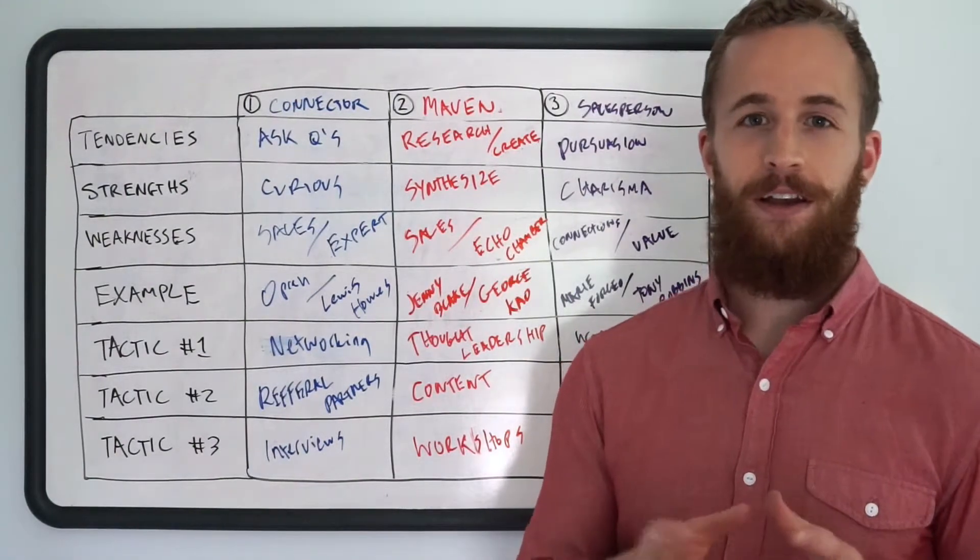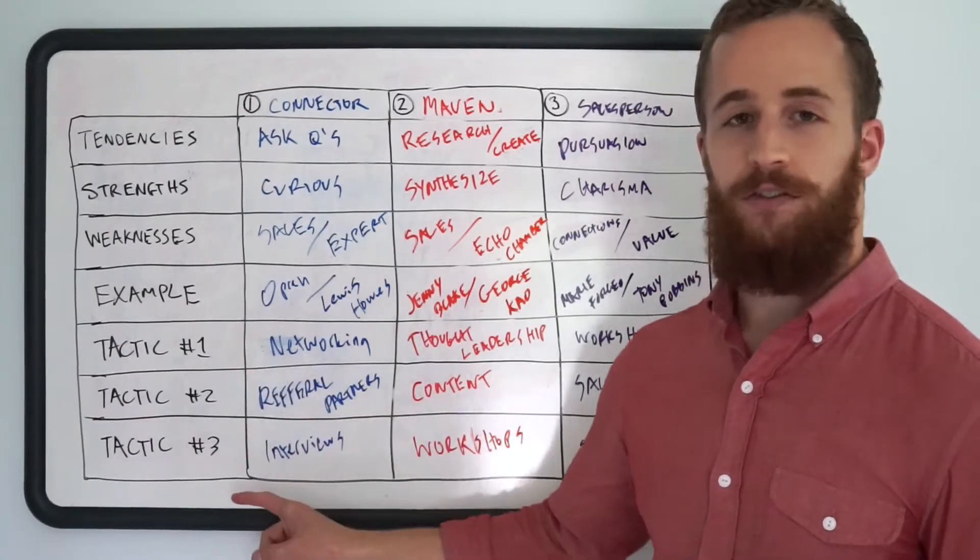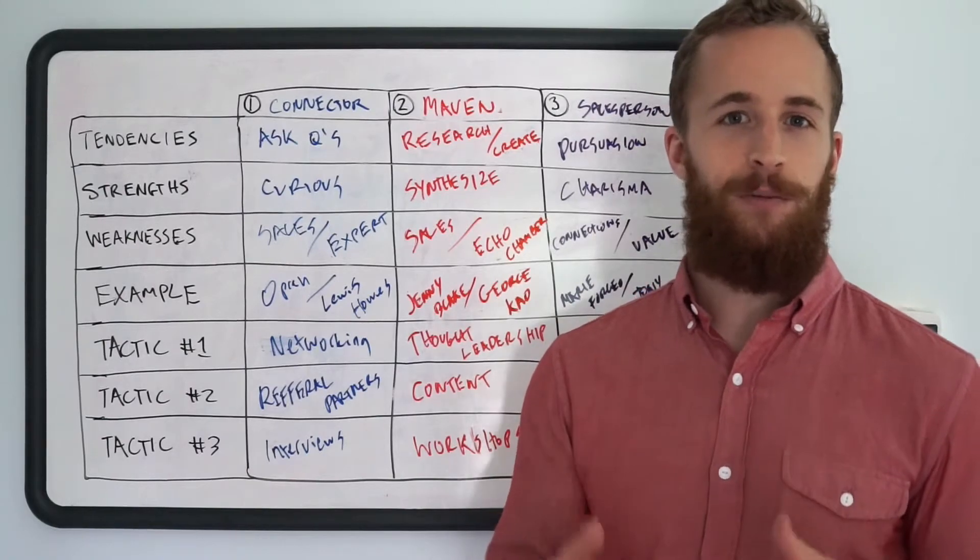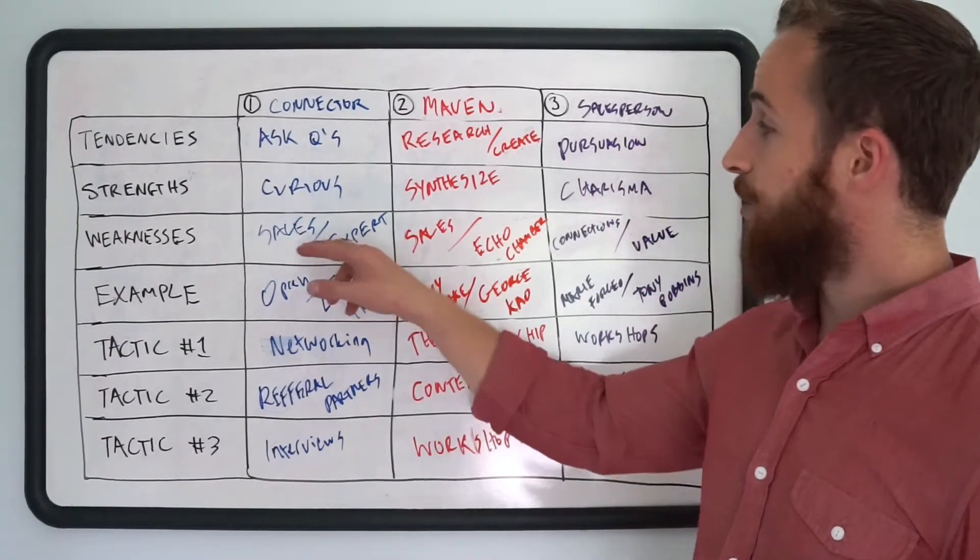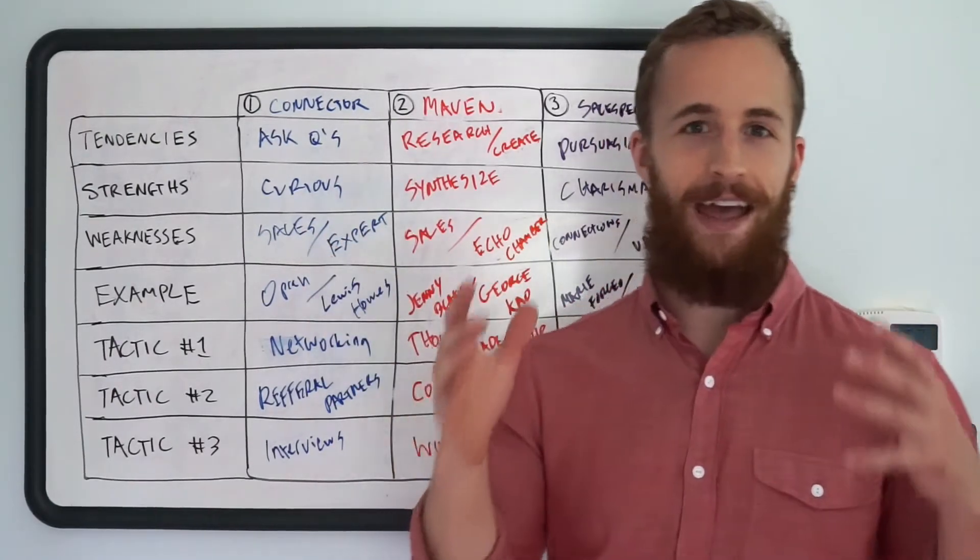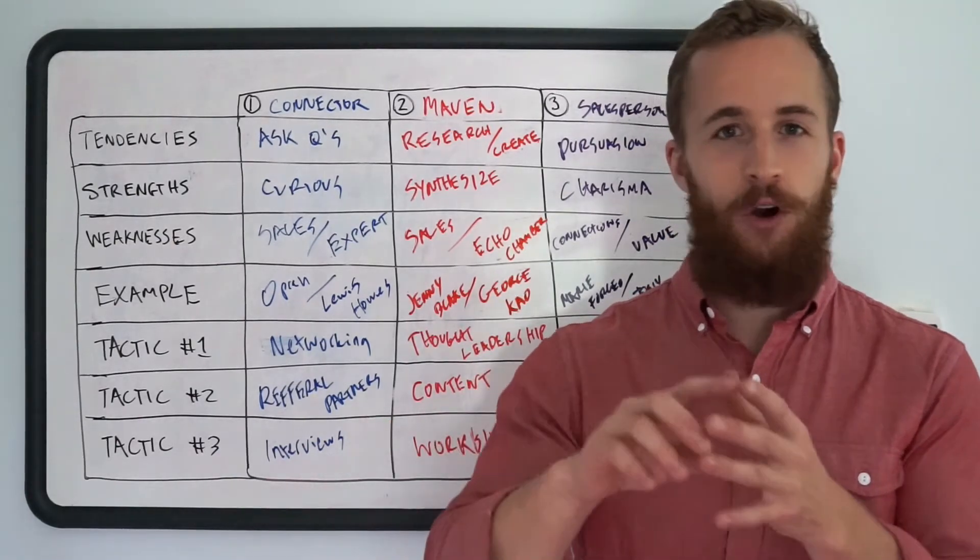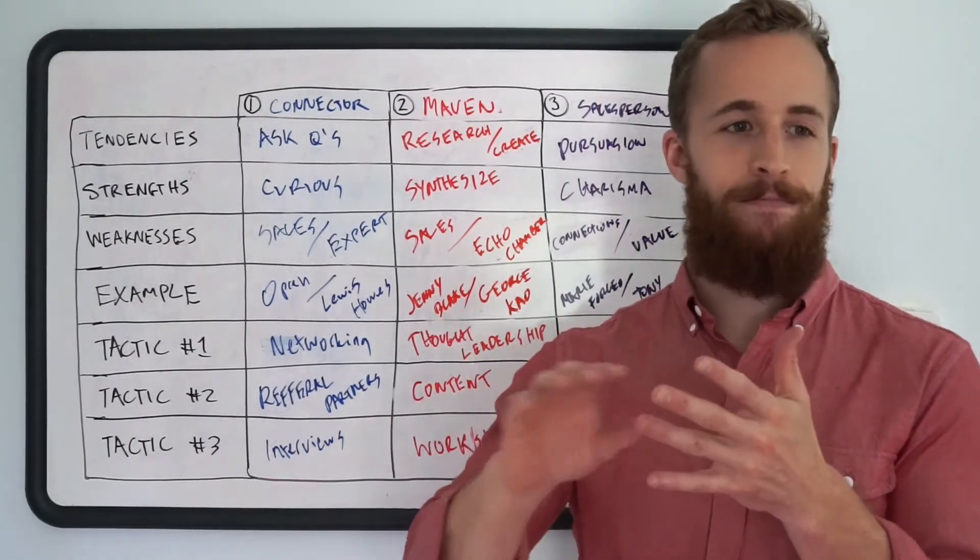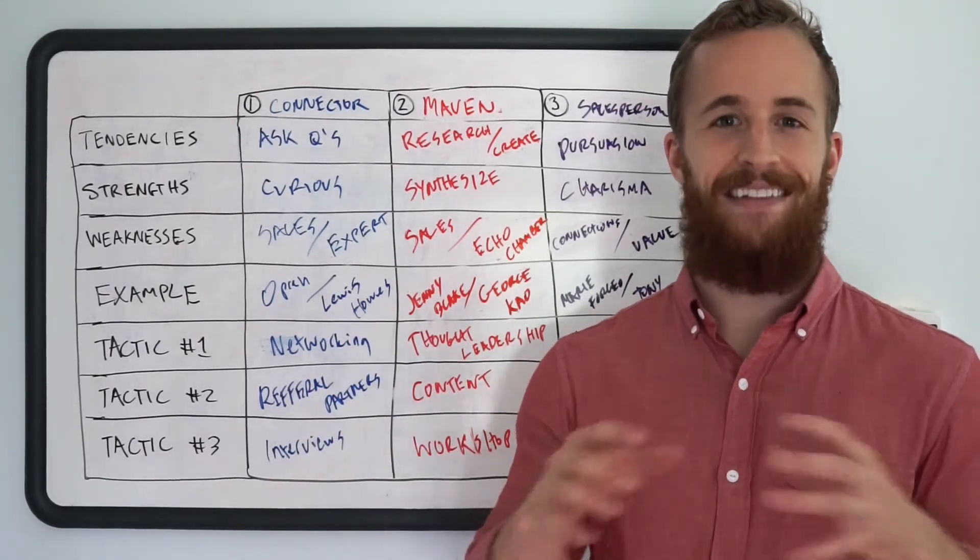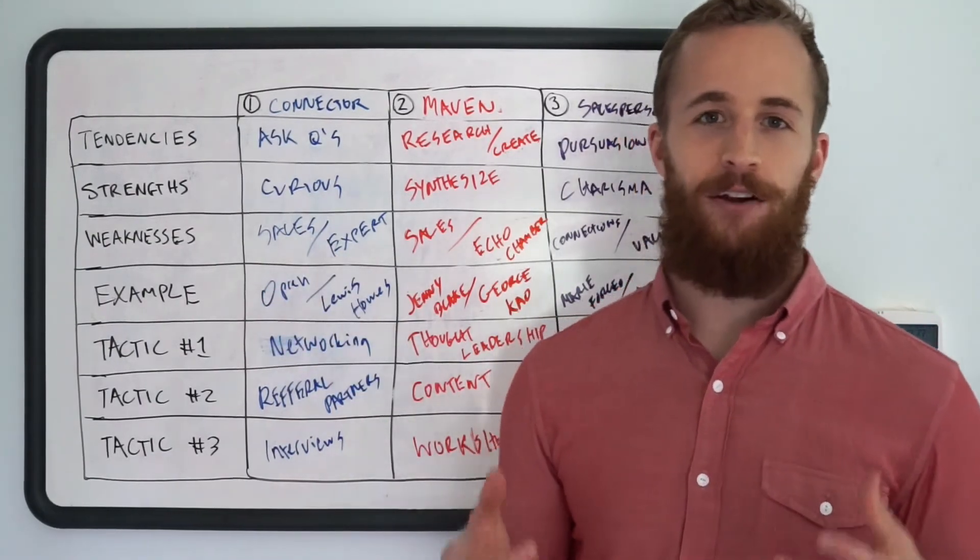So a couple things I want you to do this week. First is figure out which type you are primarily. Second is what tactics do you want to use? What's one that you want to put into practice this week to generate some leads? And a bonus is how can you shore up some of your weaknesses? It's not that if you're a connector, you have to become an expert at sales. You have to become a master at it. But figure out who can you partner with. Are there coaches or colleagues or contractors who you can outsource it to who that's their area of expertise? That's their superpower. And maybe you just have to get to a level of basic competence in the areas you're weak at.